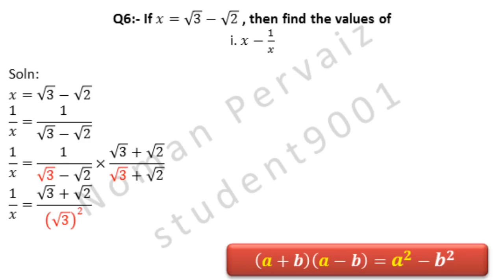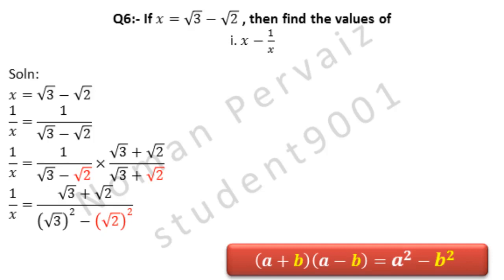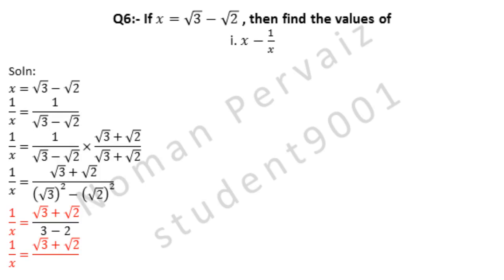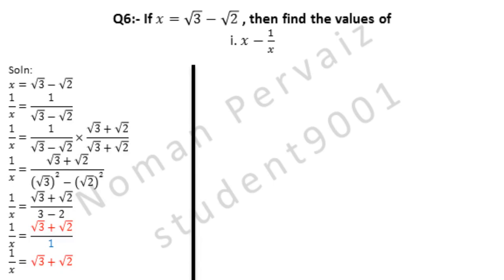By applying the formula, under root 3 whole square is written, minus under root 2 whole square. The square and square root cancel, leaving only 3, minus 2, which equals 1. So 1 over x equals under root 3 plus under root 2, divided by 1. We ignore the 1 in the denominator and write 1 over x equals under root 3 plus under root 2.